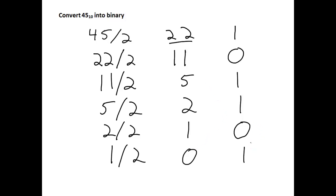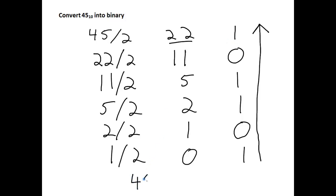Once that is complete, the binary equivalent is created by building the number back up from the remainder parts, from the bottom to the top — with the bottom being the most significant bit and the top being the least significant bit. So the answer of converting 45 into binary is 101101. That is, 45 base 10 equals 101101 base 2.